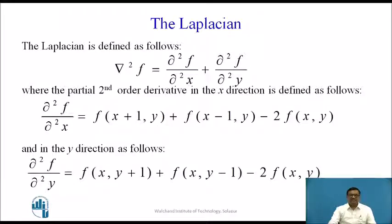The Laplacian is defined as: ∇²f = ∂²f/∂x² + ∂²f/∂y², meaning the second derivative of function f equals the second derivative with respect to x plus the second derivative with respect to y.